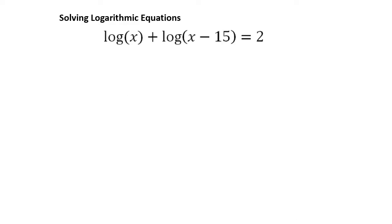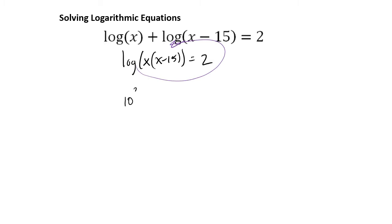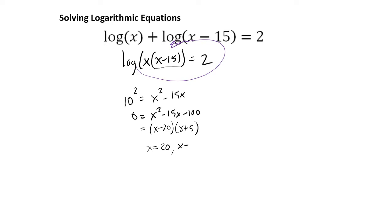Let's look at one more problem: log of x plus log of x minus 15 equals 2. We can apply the product rule and say this is the same as log of x times (x minus 15). Since it's a common log — log base 10 — we do the loop trick: 10 squared equals x squared minus 15x. This is a quadratic: 0 equals x squared minus 15x minus 100, which factors to (x minus 20)(x plus 5). So x equals 20 and x equals negative 5.